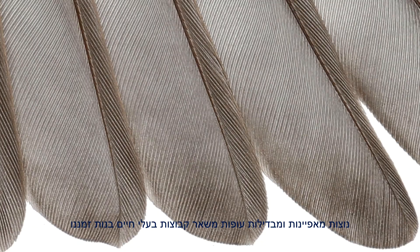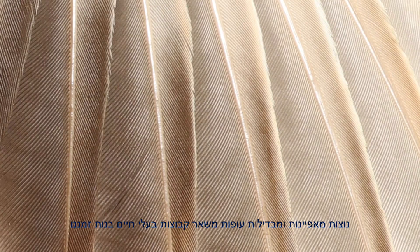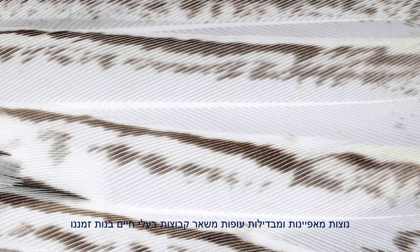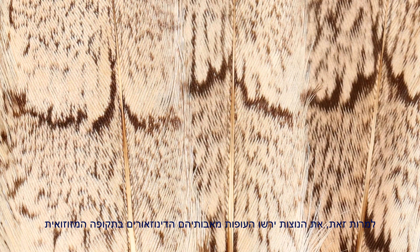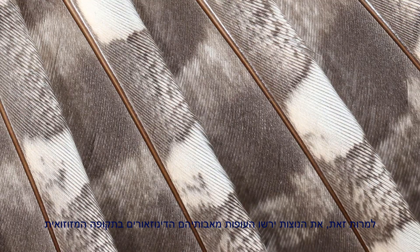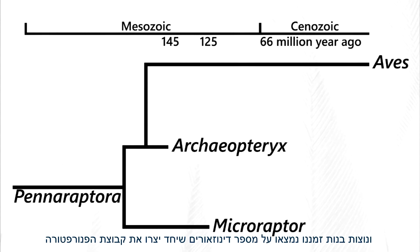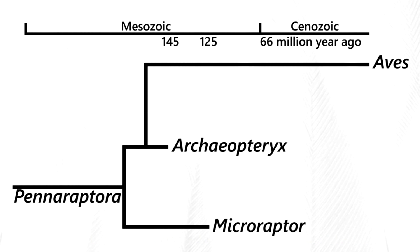Feathers are a diagnostic feature that distinguishes extant birds from other animal groups. However, birds inherit their feathers from their dinosaur ancestors in the Mesozoic, and feathers similar to those in modern birds were present in several groups of dinosaurs which together form a clade of the Panaraptora that also includes birds.